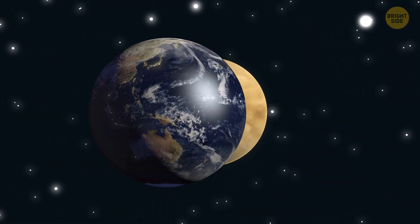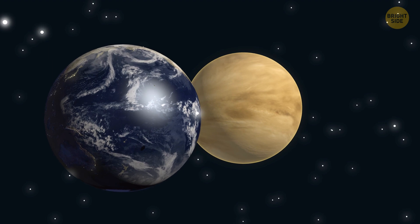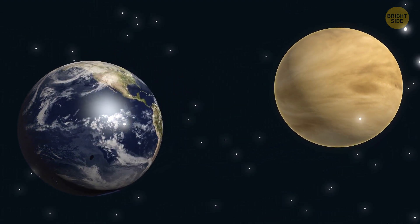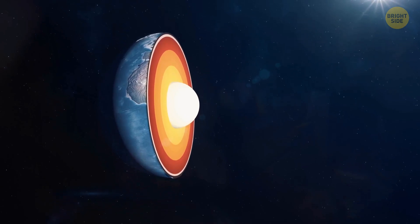Venus is often referred to as Earth's twin. That's because Venus is almost as big as Earth, just a tad smaller, and these two planets look quite similar on the inside.